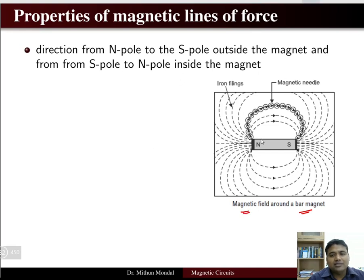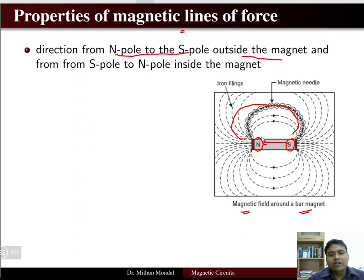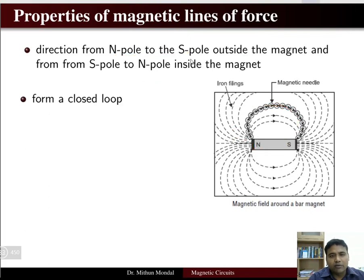This is the bar magnet — this is the north pole and this is the south pole. The direction of the magnetic lines of force is from north pole to south pole outside the magnet, and from south pole to north pole inside the magnet. This is the magnetic lines of force for a bar magnet.